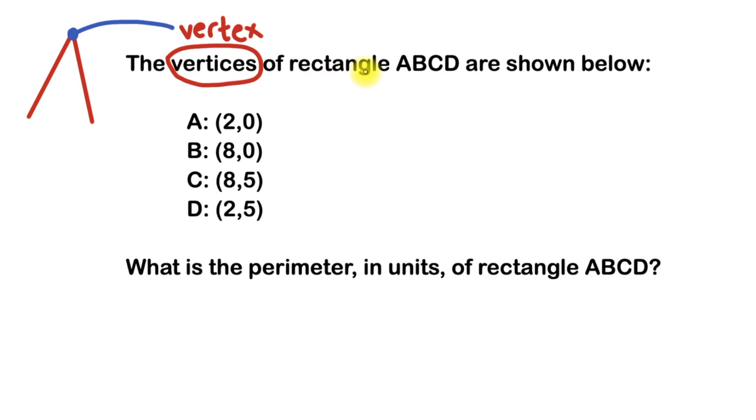And rectangle ABCD is going to have four vertices. One is point A, one is point B, one is point C, and one is point D.